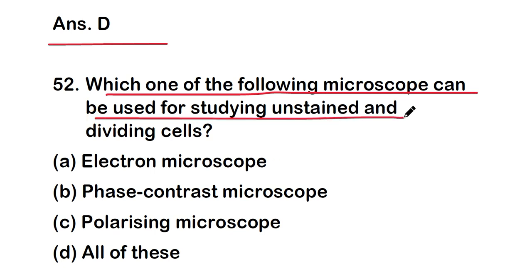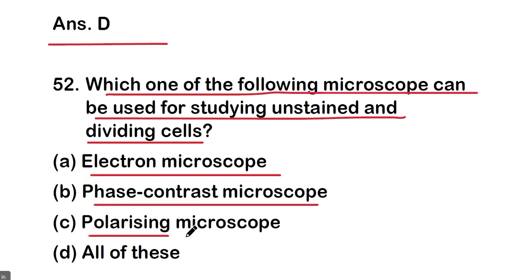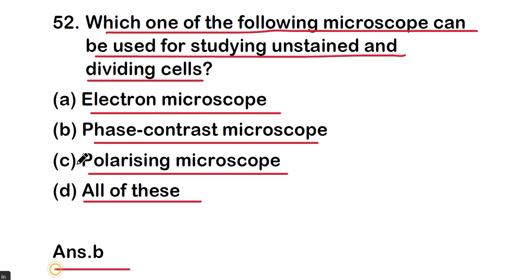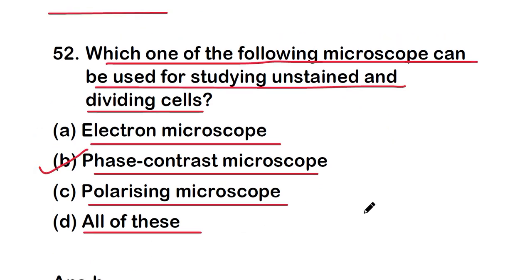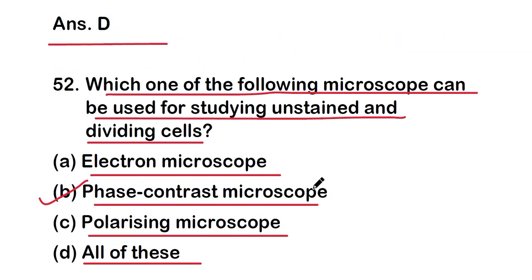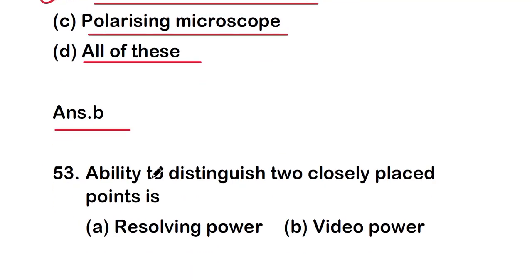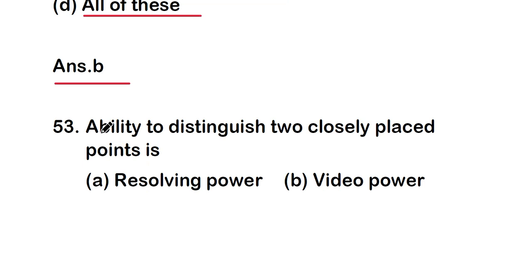Next question: which one of the following microscopes can be used for studying unstained and dividing cells? Options are: electron microscope, phase contrast microscope, polarizing microscope, or all. The right answer is option B — phase contrast microscope can be used for studying unstained and dividing cells.